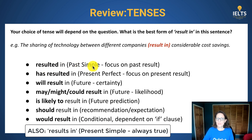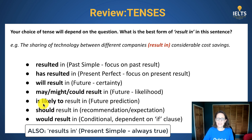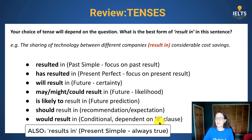'Resulted in' is past simple. 'Has resulted' focuses on recent events. 'Will' is future. Possibility or likelihood here, and 'should' is a recommendation or expectation, and 'would' if you've used 'if' as a conditional.